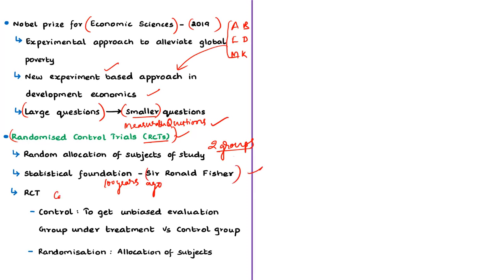The author discusses two important constraints of RCT: control and randomization. Control is essential to get an unbiased measure of the effectiveness of a treatment such as a clinical trial. For example, a group under study of a new treatment would be compared with another group receiving no treatment or an existing treatment.